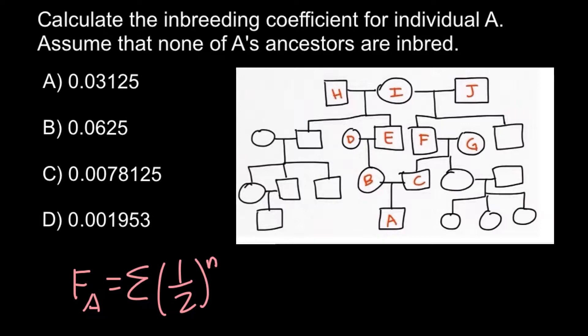And in our formula, n stands for the number of nodes between the individual that is inbred and the common ancestor of his parents.